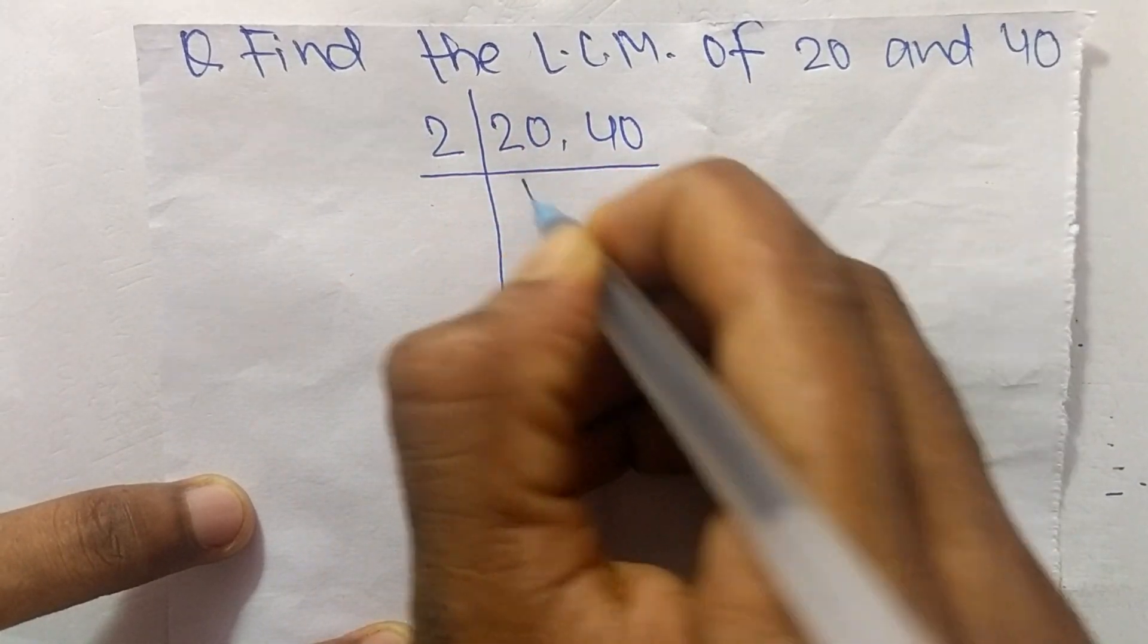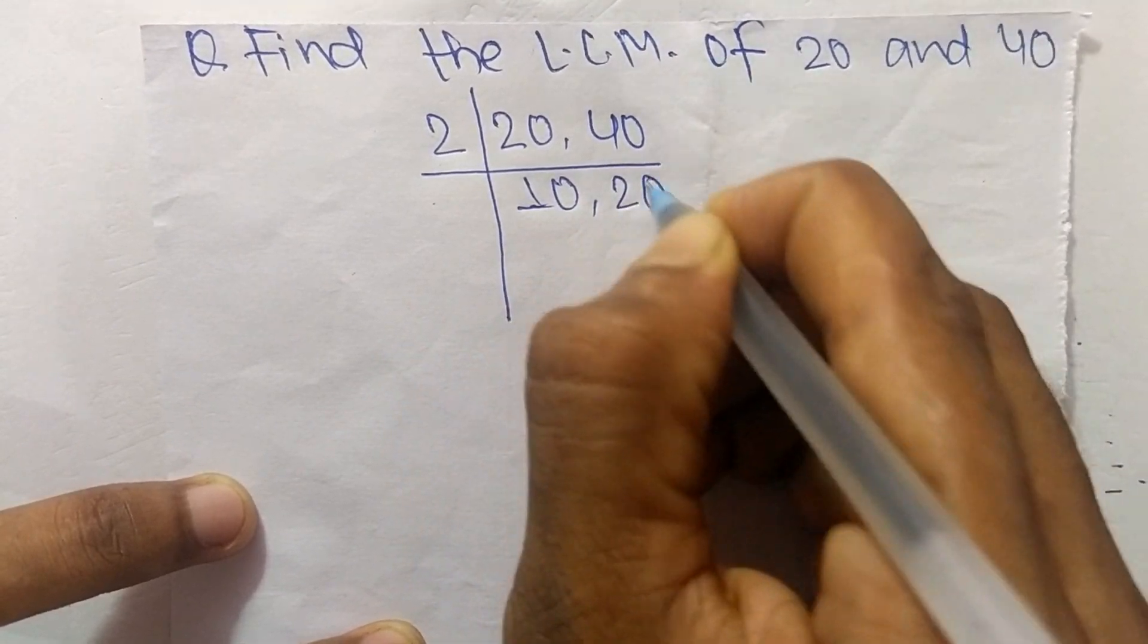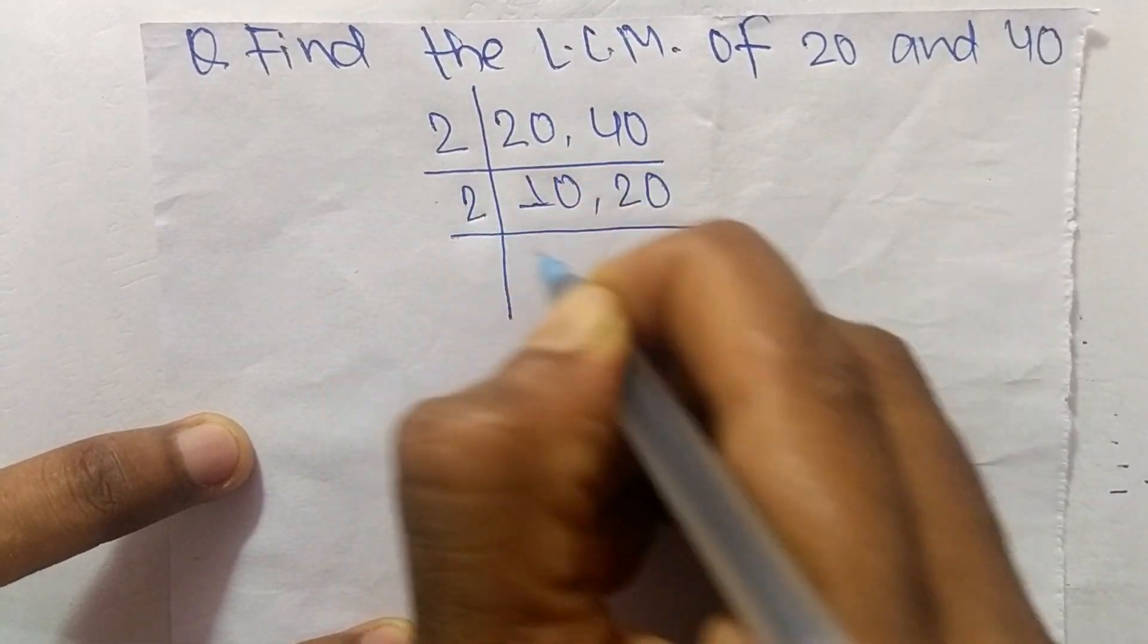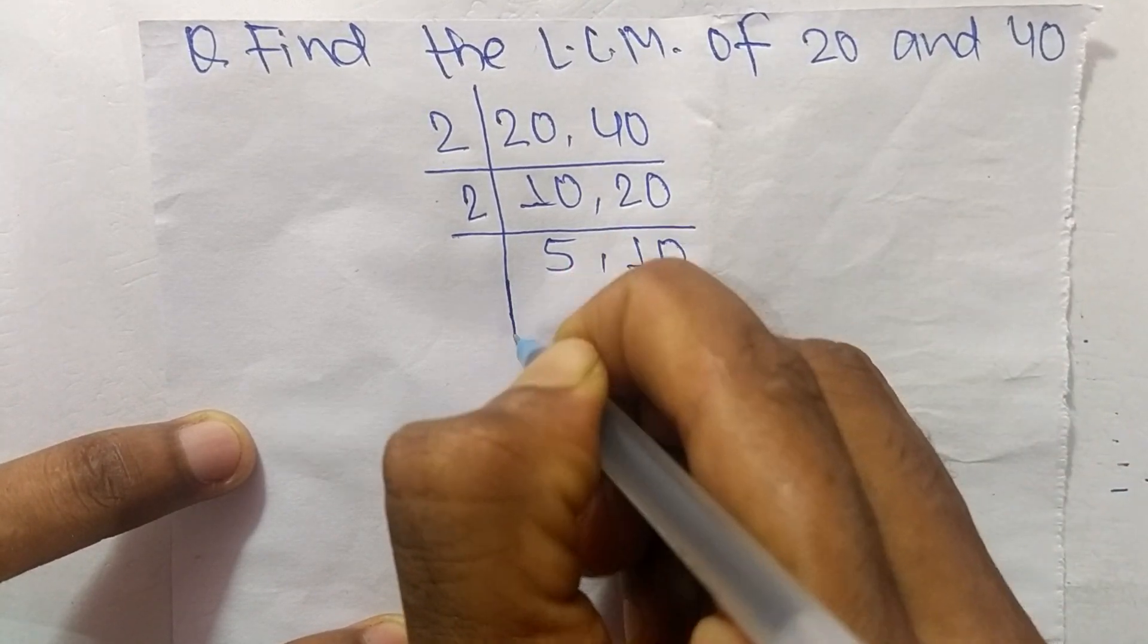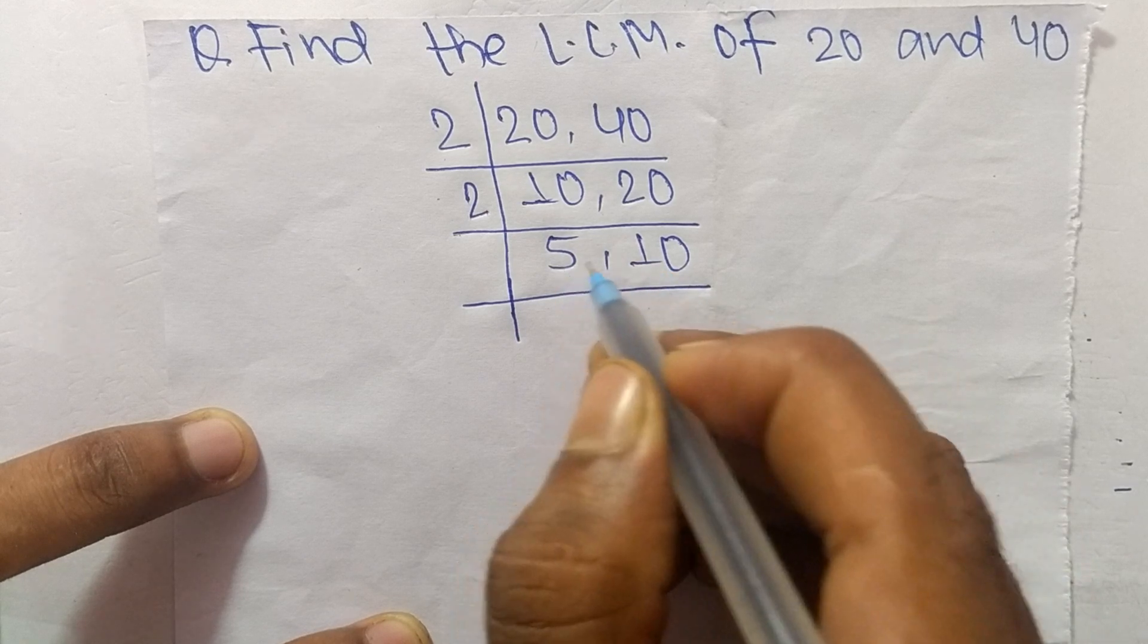2 times 10 is 20, 2 times 20 is 40. So 2 times 5 is 10 and 2 times 10 is 20. Now 2 can't exactly divide both numbers.